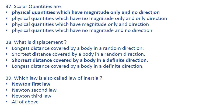Scalar quantities are physical quantities which have magnitude only and no direction. Vector quantities have both magnitude and direction. So scalar quantities have magnitude only with no direction.